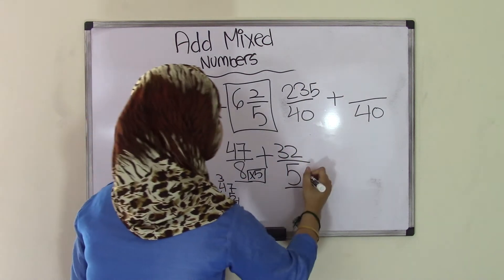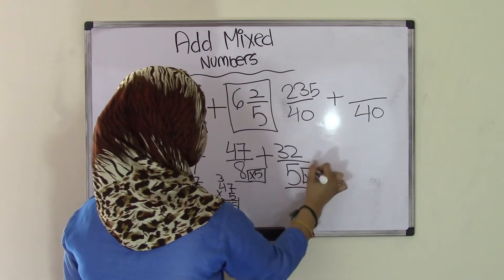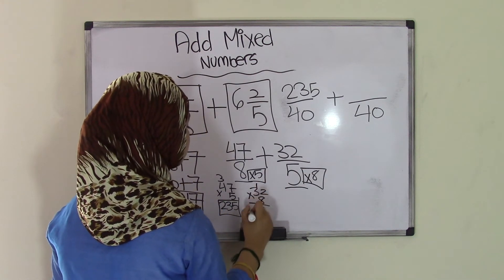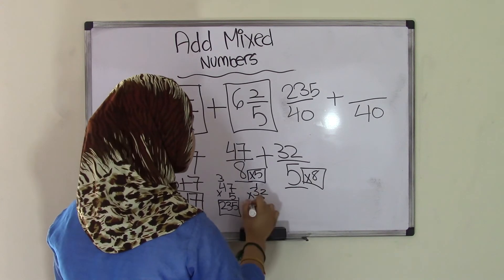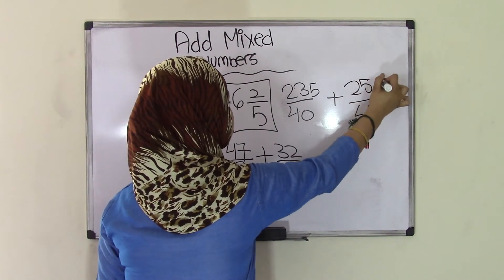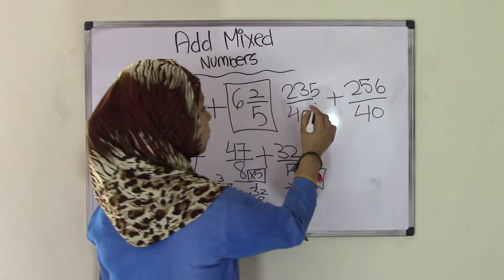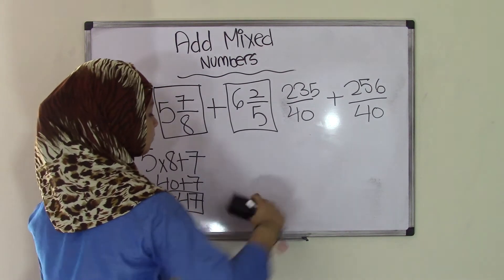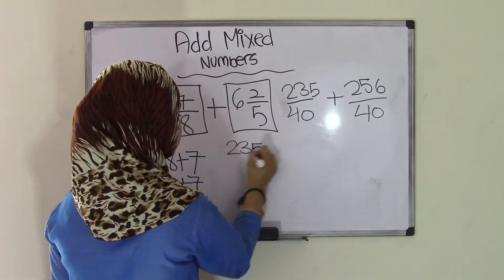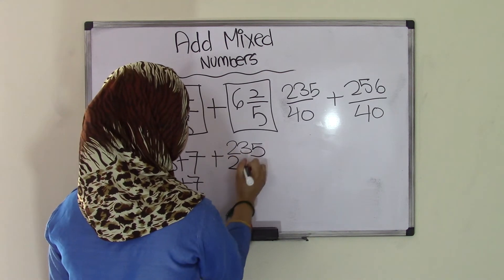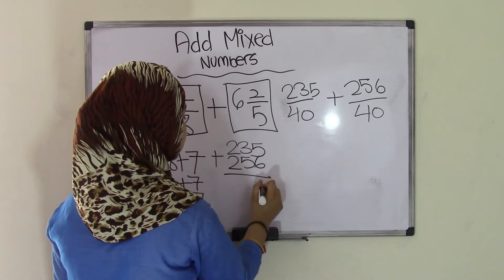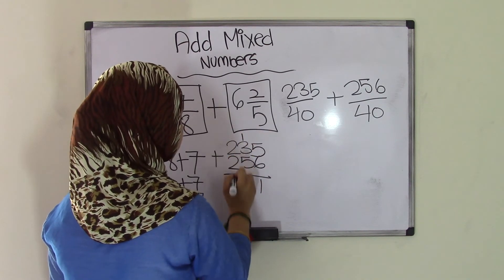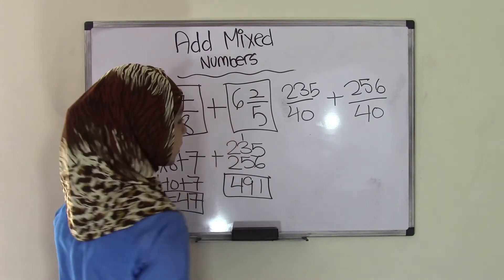Now same thing over here, 5 times 8 gave us 40, so we're going to have to do 32 times 8. 32 times 8, 8 times 2 is 16, bring up the 1, 8 times 3 is 24, plus 1 is 256. So 256. Now we just do a simple addition, 235 plus 256. 5 plus 6 is 11, bring up the 1, 5 plus 3 is 8, plus 1 is 9, 2 plus 2 is 4, we get our sum of 491.